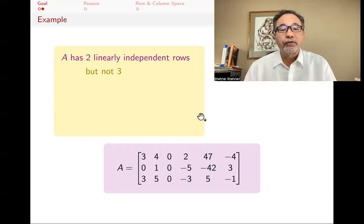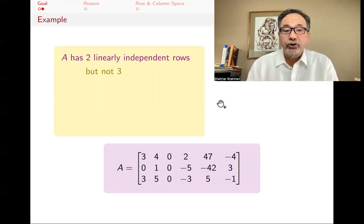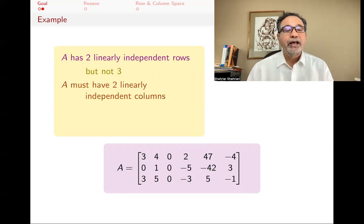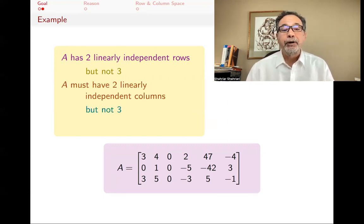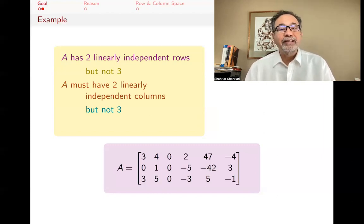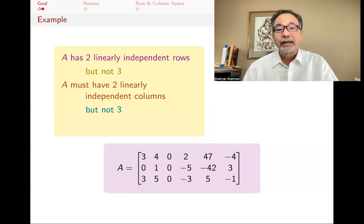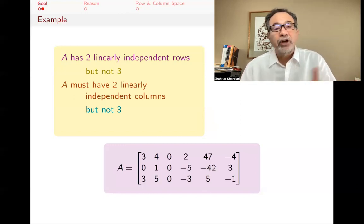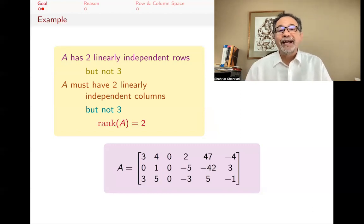So the maximum number of linearly independent rows you can find in this matrix is two. You don't have to pick the first two — you could pick any two, and any two of them would be linearly independent, but the third would be linearly dependent on those. The same matrix, by the theorem, must have two linearly independent columns but not three. It's not so obvious that there aren't three linearly independent columns — you would have to do some work to verify that. So this matrix has rank two.